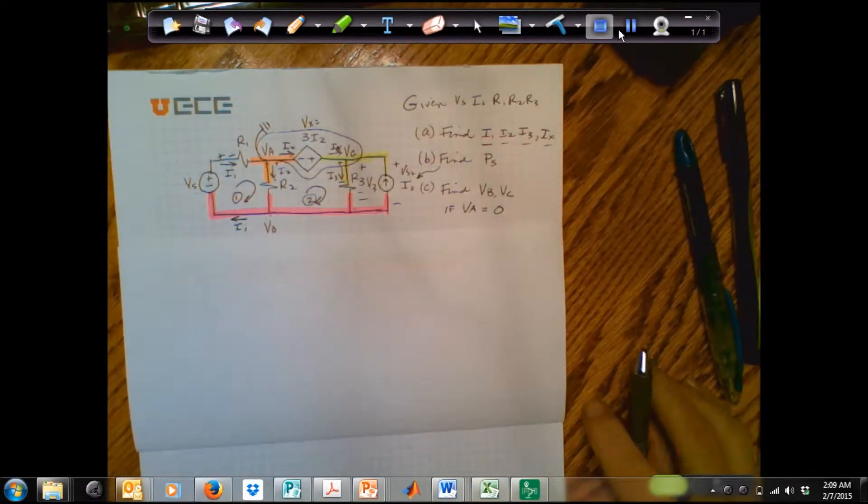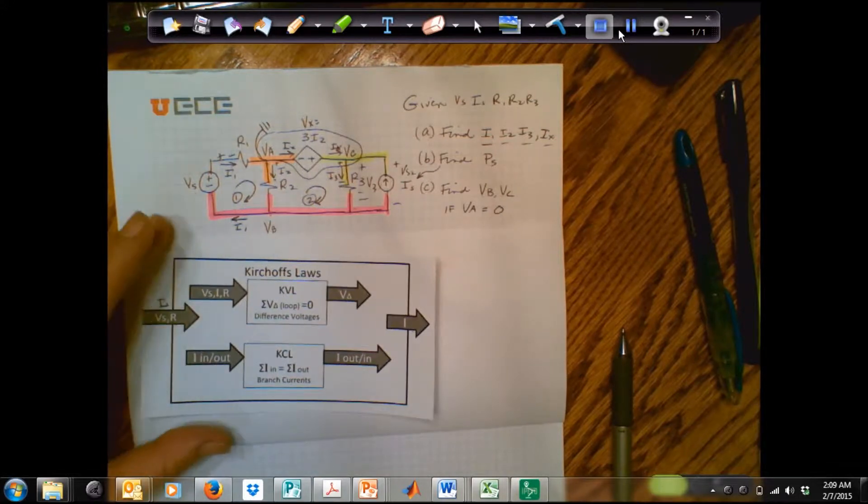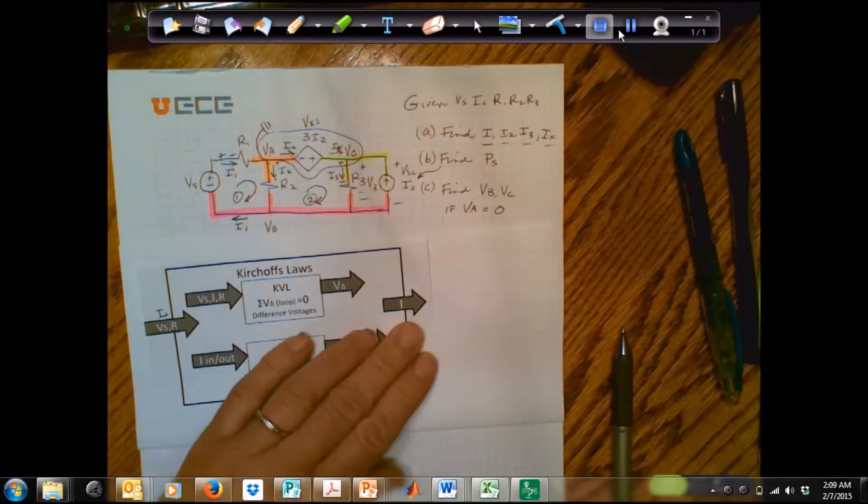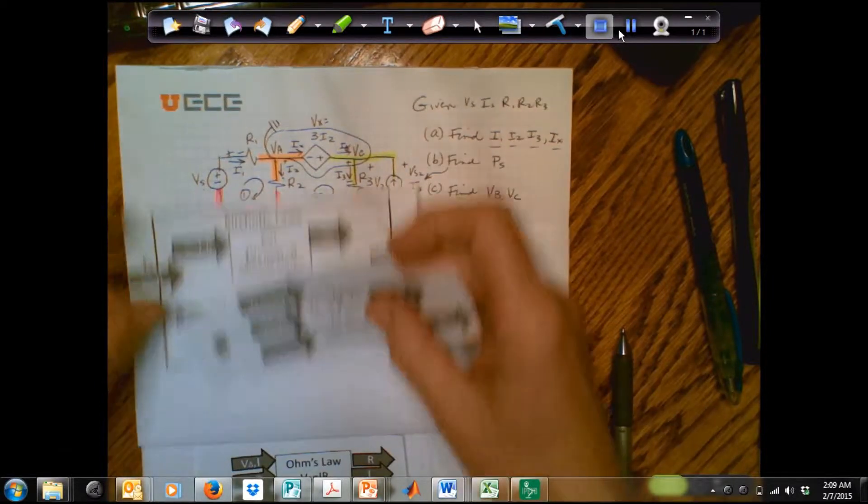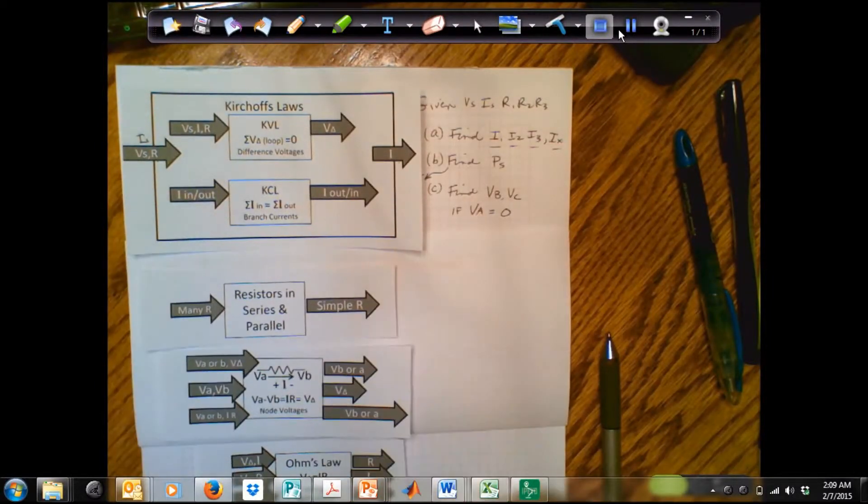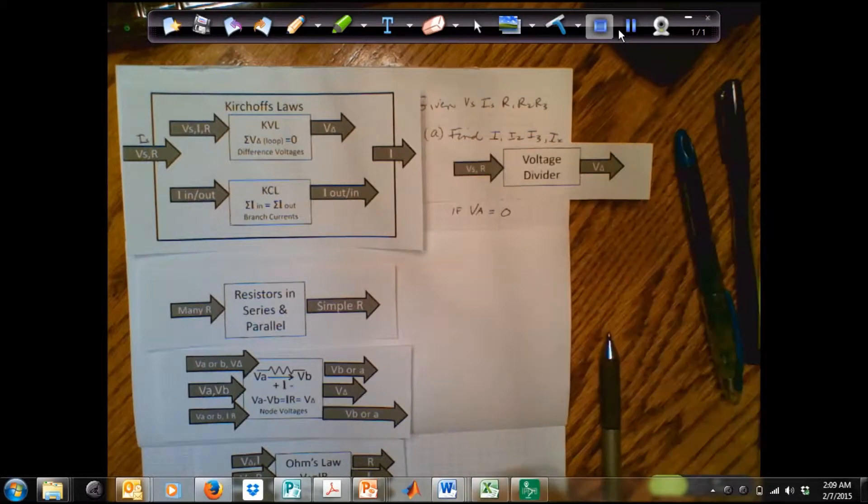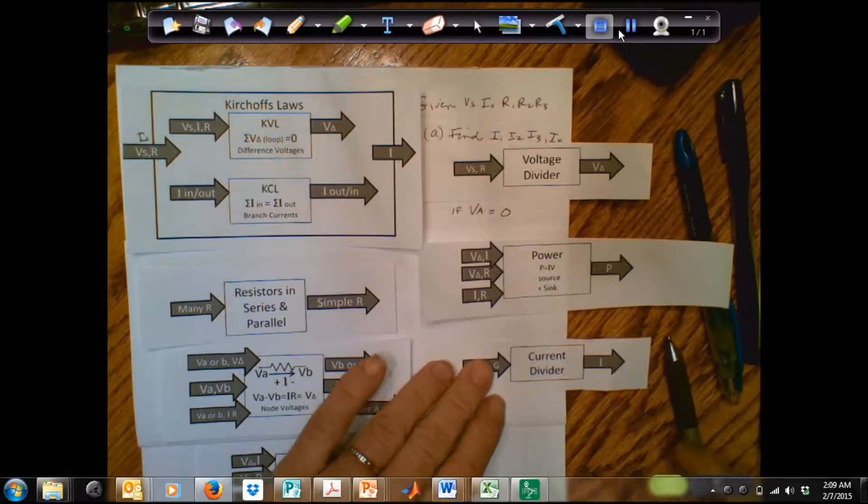Okay, if I wanted to find my other node voltages, what would I do? I used Kirchhoff's Law with my sources to find my current. What other tools do I have that I could use? Let me spread these out. What other tools do I have that I could use to be able to find node voltages?